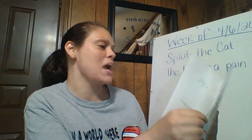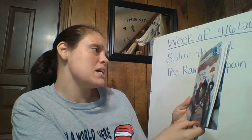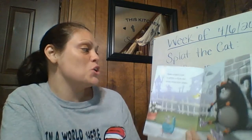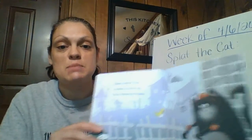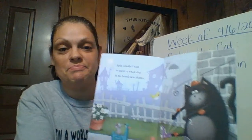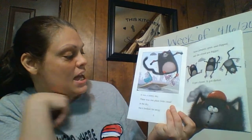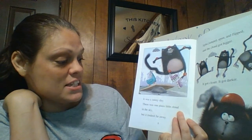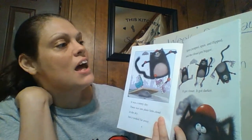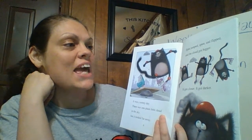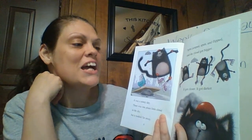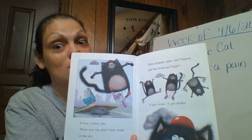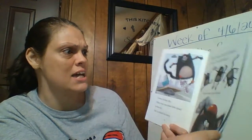Splat the Cat: The Rain is a Pain, written by Rob Scotton. Splat couldn't wait to spend a whole day in his brand new skates. It was a sunny day. There was a plain little cloud in the sky, but it looked far away. Splat jumped, spun, and flipped — and the cloud got bigger. It got closer. It got darker. I wonder what's going to happen next.